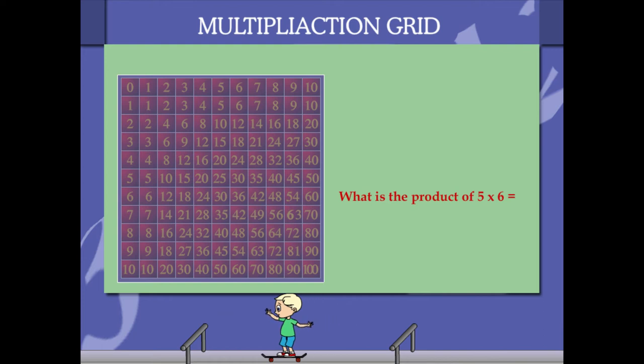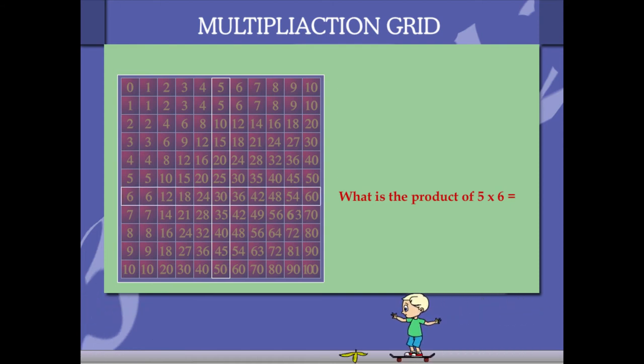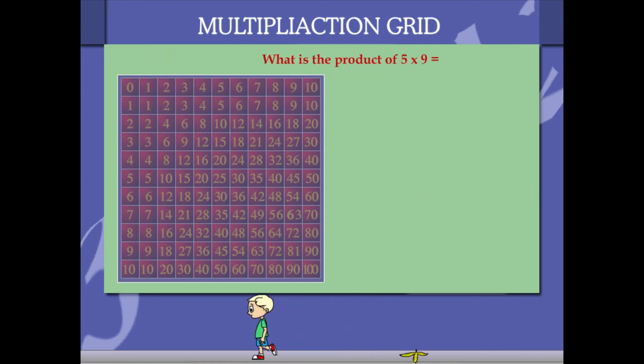So you select 5 in the horizontal column and go down vertically. Now you select 6 in the vertical column and move horizontally. The two meet at 30, and 30 is the answer. Here is another example: 5 into 9.